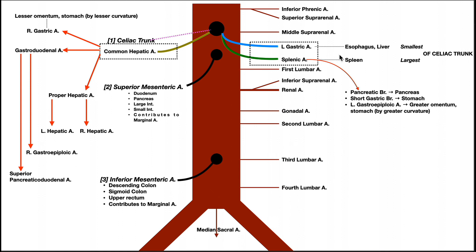The splenic artery travels to the spleen, giving off several branches along the way. First is the pancreatic branch, supplying the pancreas. Then the short gastric branch, supplying the stomach. Finally, the left gastroepiploic artery supplies the greater omentum and the inferior part of the stomach near the greater curvature. After these branches, the splenic artery continues to the spleen and enters via the hilus.